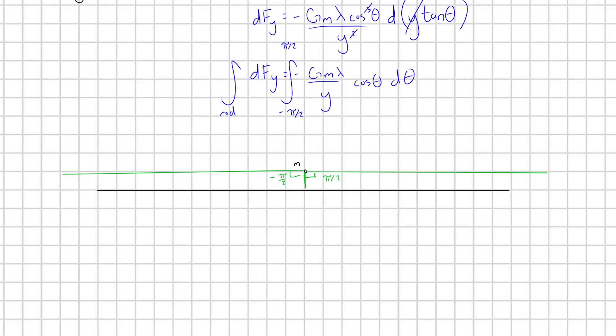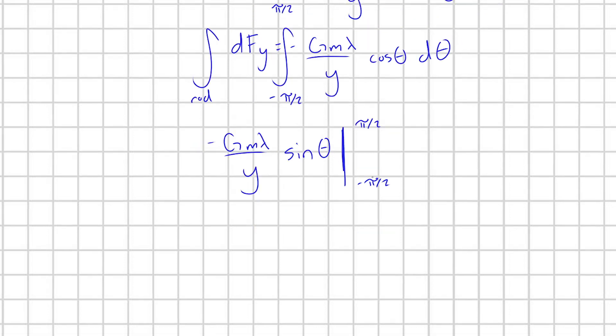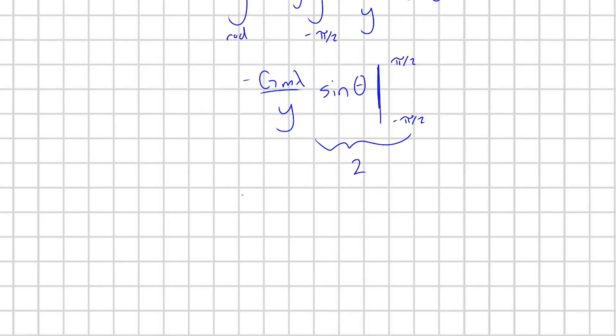Let me get rid of this picture here. And this integral is no problem at all. We just pull our constants out. We have minus Gm lambda over y. What is the integral of cosine theta? That's just sine theta. And we evaluate this from pi over 2 to minus pi over 2. We plug in pi over 2 and minus pi over 2 in. Evaluating this guy out is just going to give us a factor of 2.